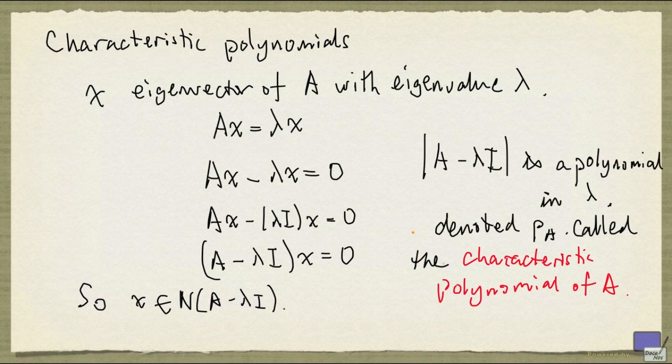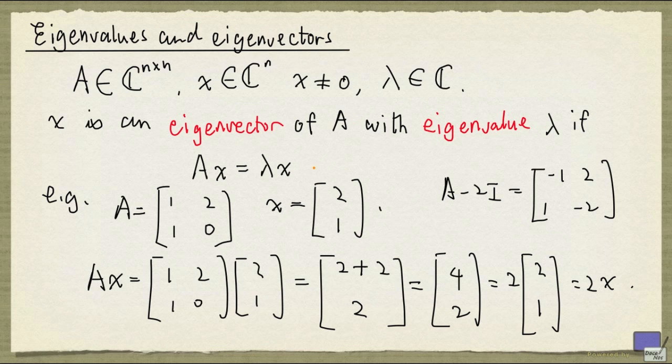So every eigenvalue of A is a root of this polynomial. And conversely, every root of this polynomial is going to be an eigenvalue of A. So let's look at our example again. And this time, we want to form the characteristic polynomial of A.